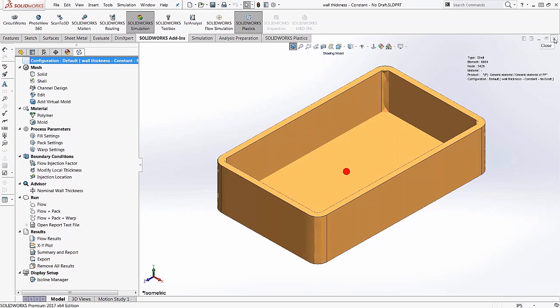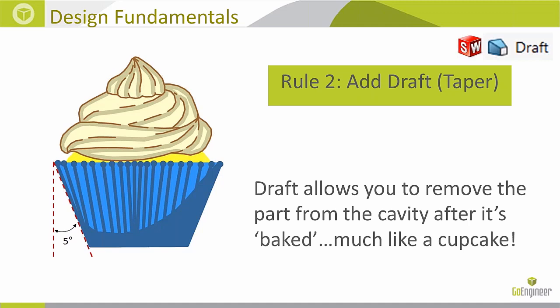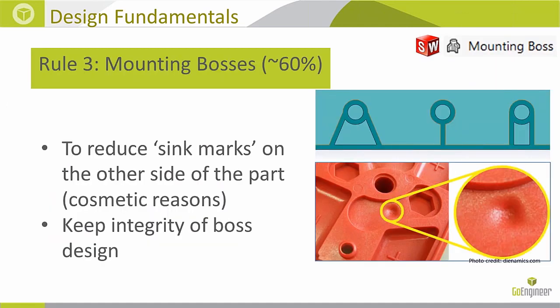Rule number three: mounting bosses should be about 60% of the general wall thickness. It's not an exact science, but they should definitely be less than the general wall thickness. This reduces sink marks on the other side of the part. Having a really heavy wall thickness on a mounting boss creates cosmetic flaws. Your analysis tool can help you dial in the right percentage.